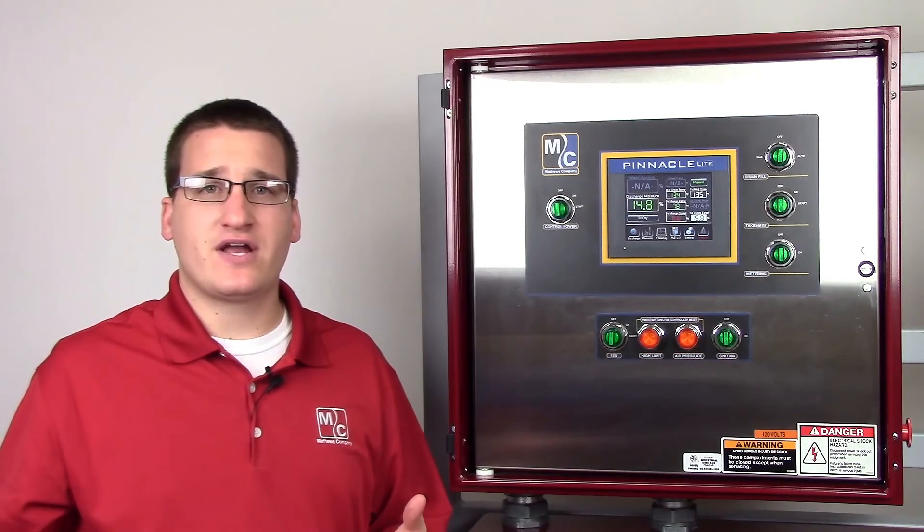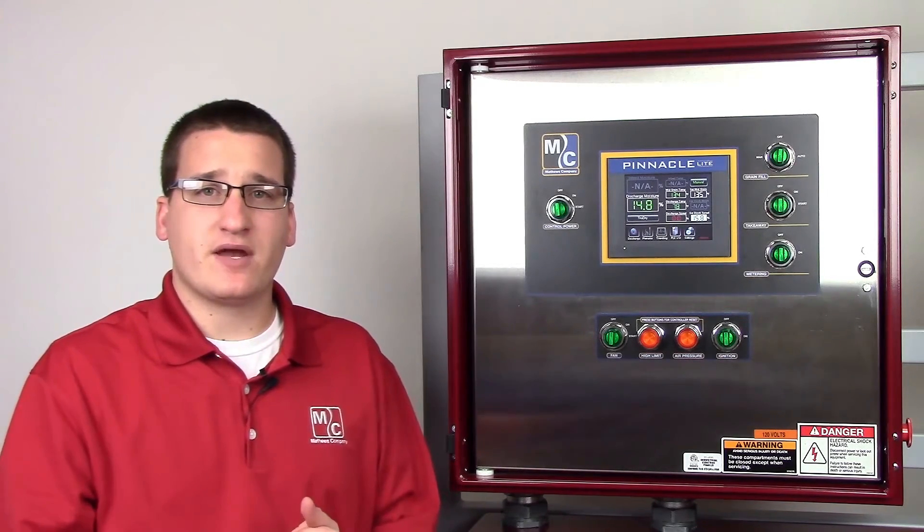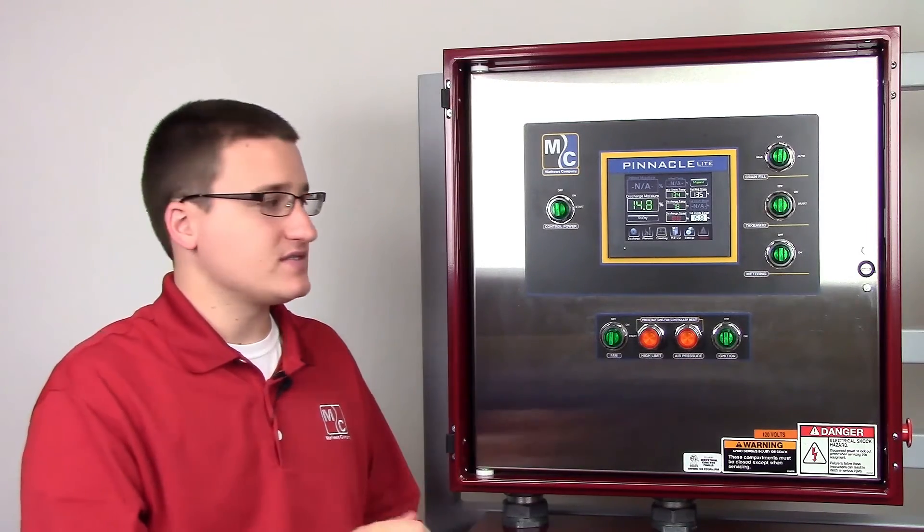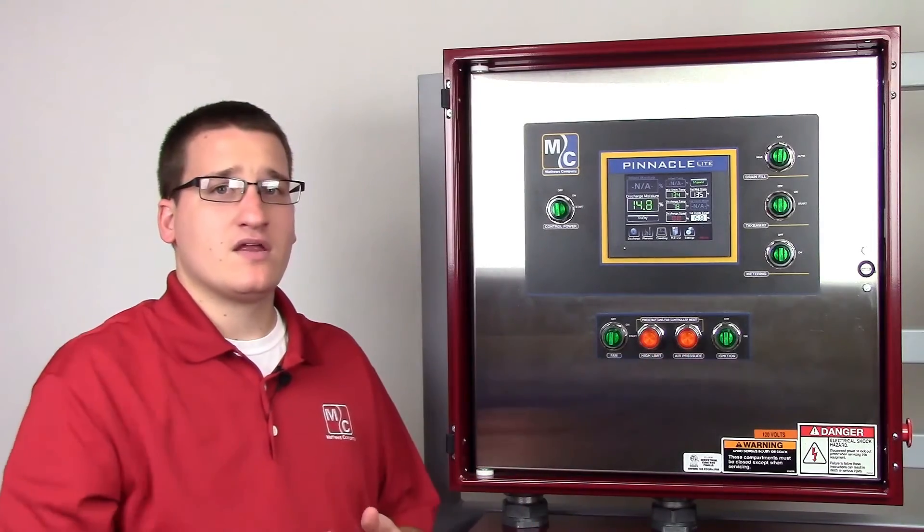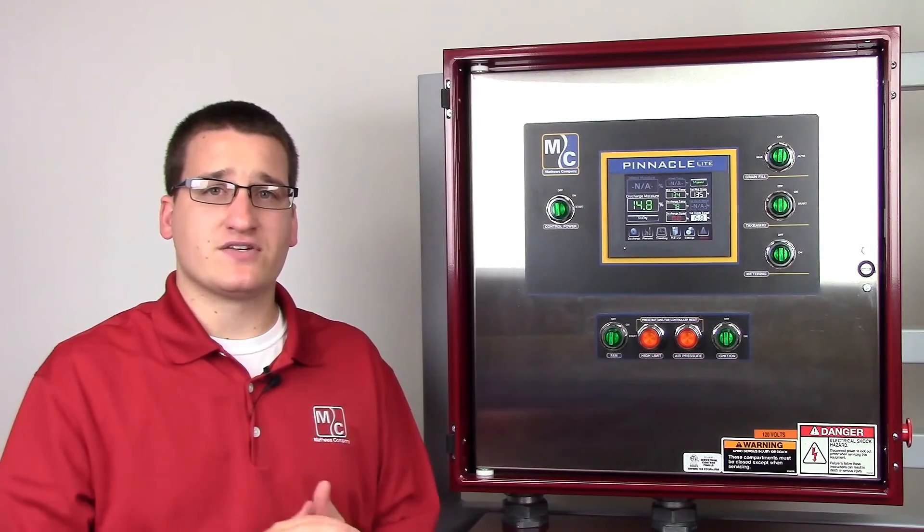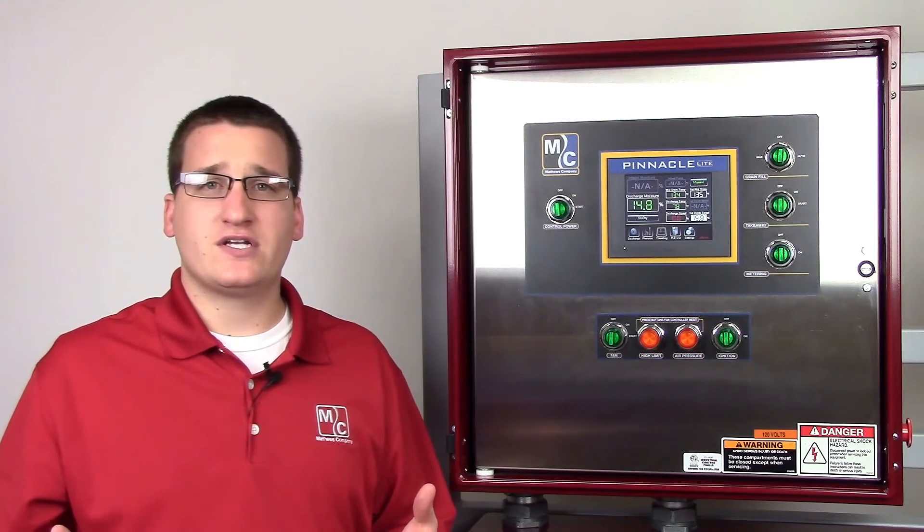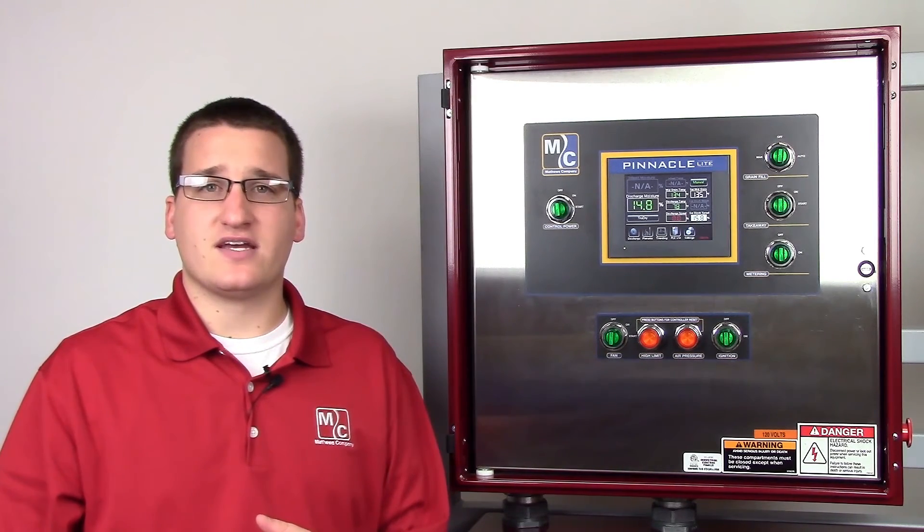You may want to reset your CAL controllers. You can do this by pushing in the high limit and air pressure buttons simultaneously. This will prevent nuisance alarms on startup. You've just shut down the dryer in a way that's easy to start up the next day.